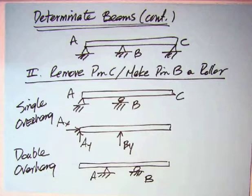Where again you have the AX and AY here and the BY there. You still have three unknowns. But that's those particular types of beams.